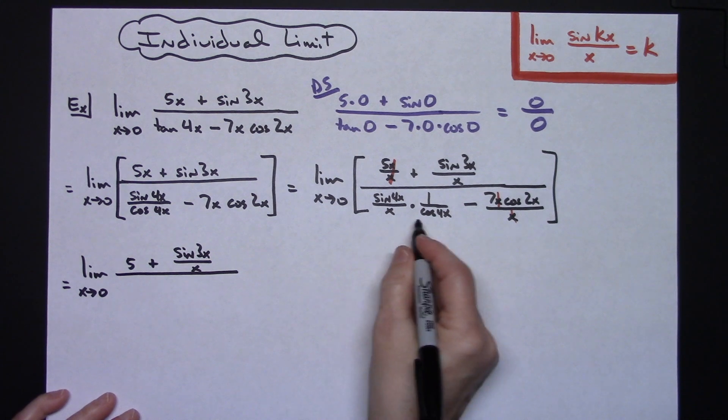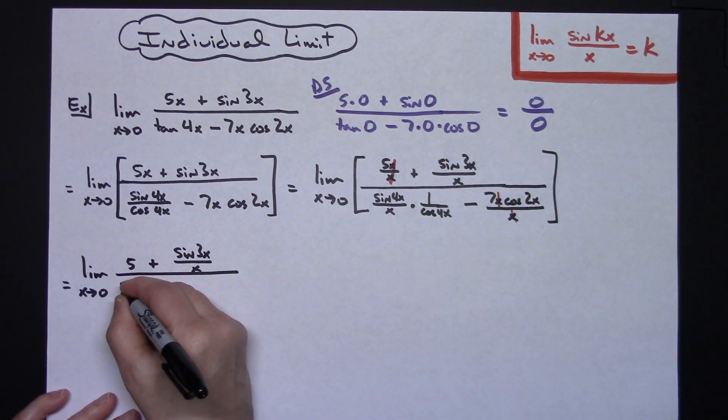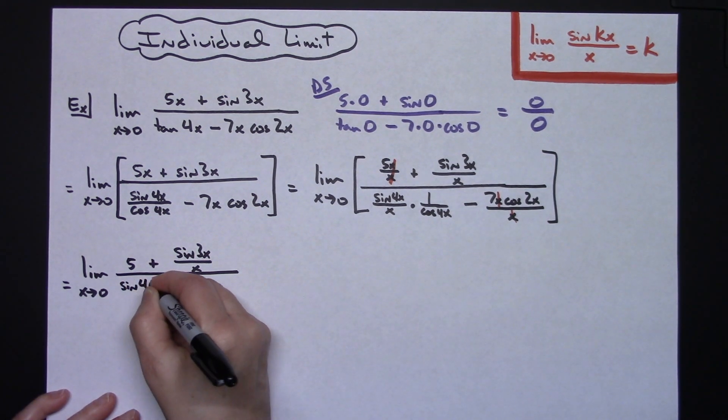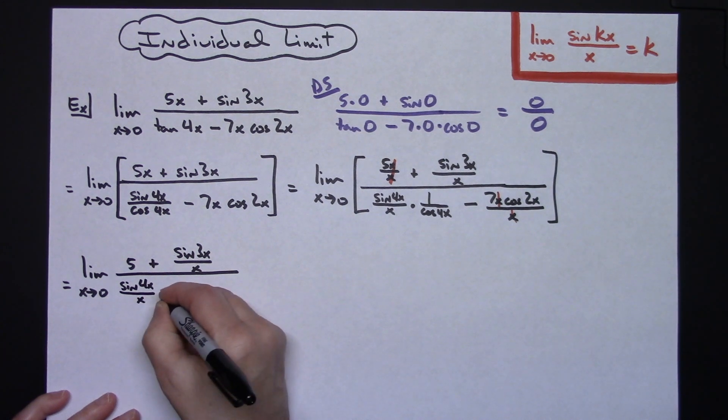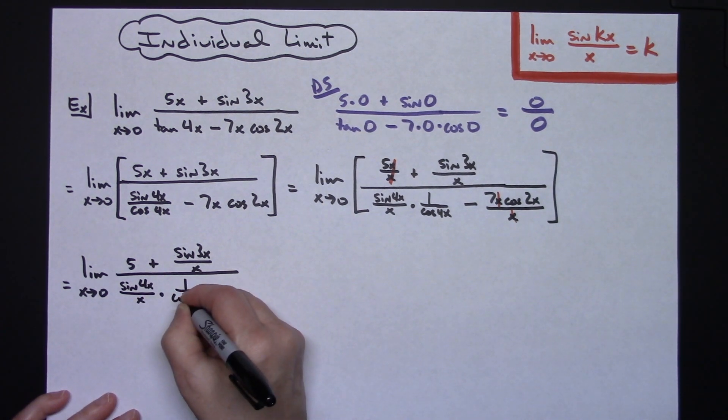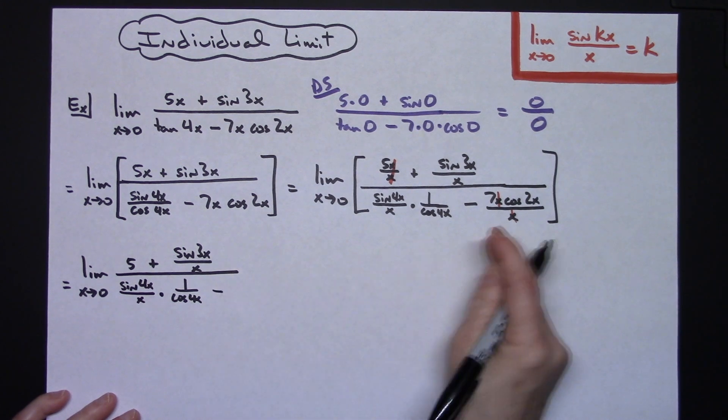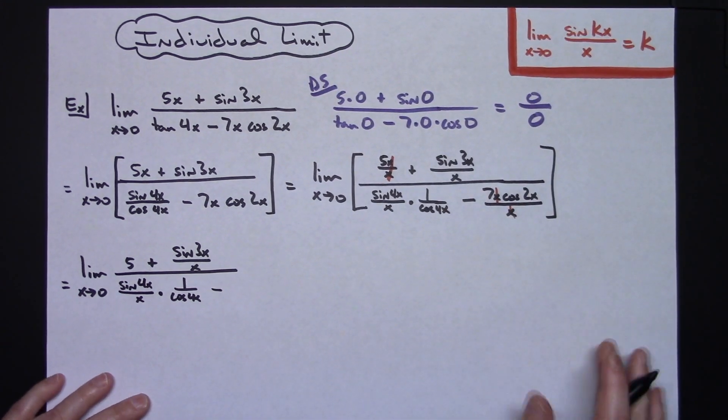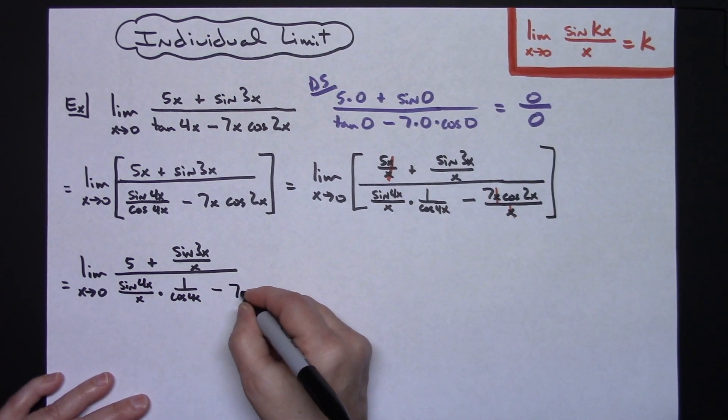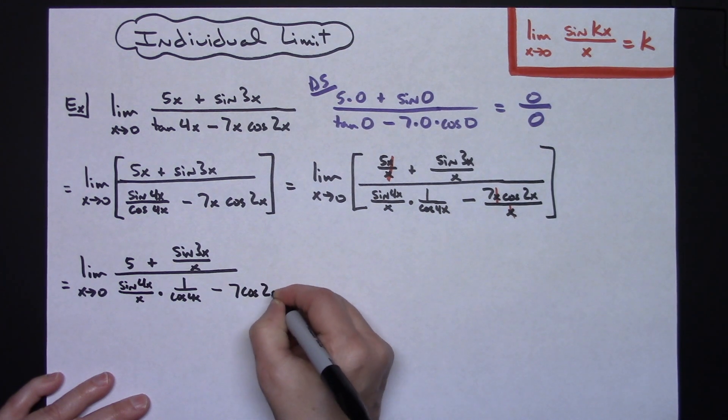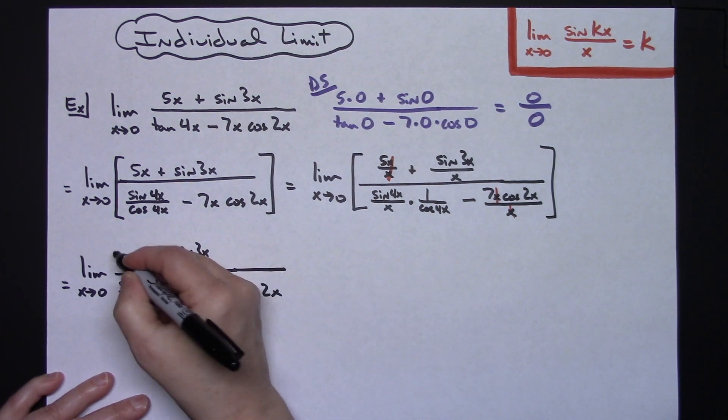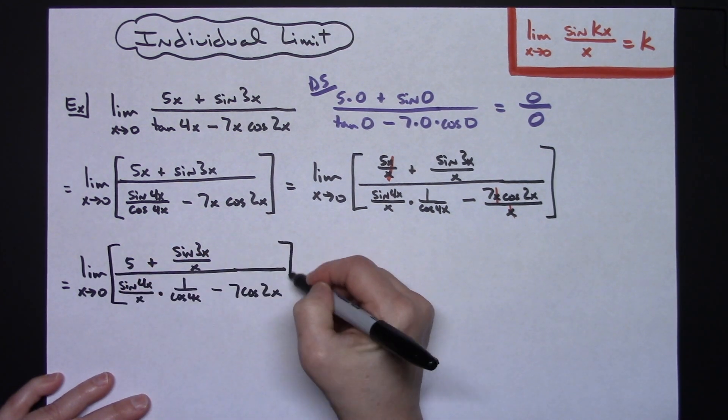We're going to leave all of this in the denominator as is. So sine of 4x over an x times 1 over the cosine 4x. And then minus - I can get rid of that fraction there because the x is crossed out - I'll just have a 7 cosine 2x. We're taking the limit of all of that now.